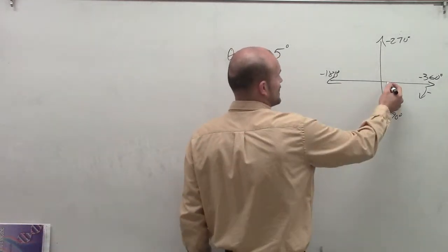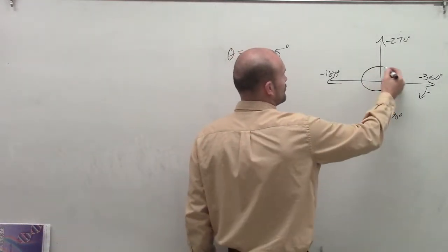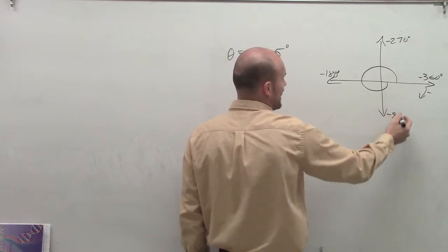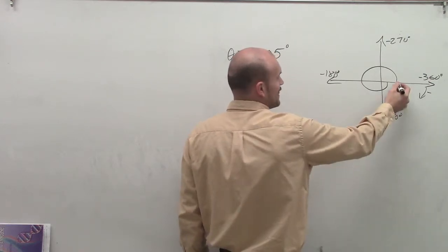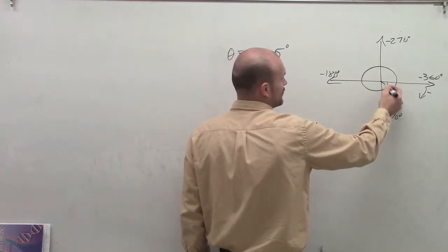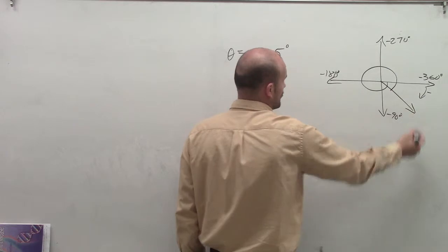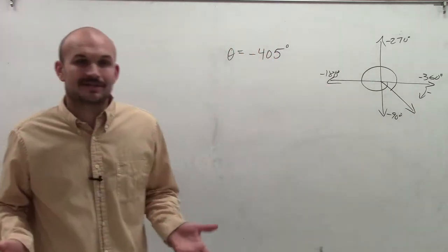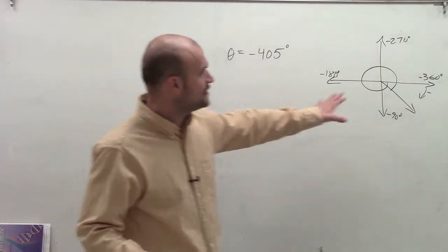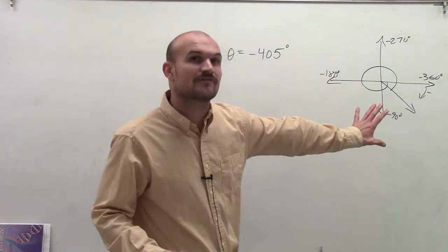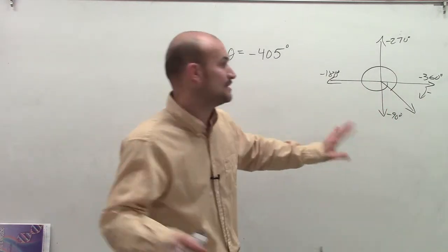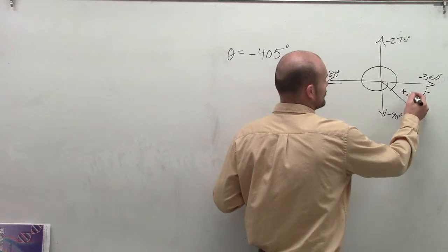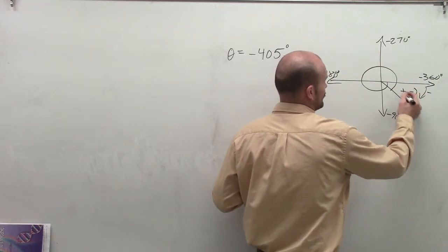Negative 405 degrees is obviously going to be past negative 360 degrees, but not all the way to negative 450 degrees. So it's roughly going to be an angle somewhere around here. At least we know that our angle is in the fourth quadrant. What's important about an angle in the fourth quadrant is the x value is positive and the y value is negative.